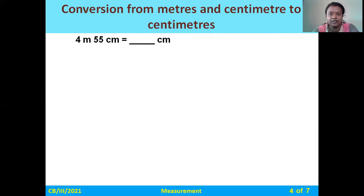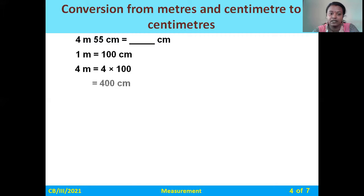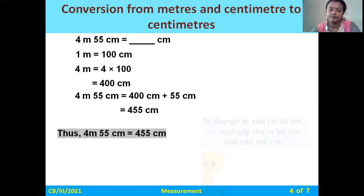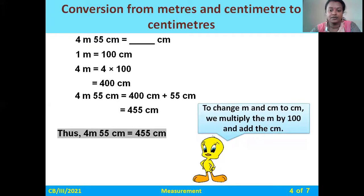Let us see meters and centimeters to centimeters — that is, 4 meters 55 centimeters converted to centimeters. We know 1 meter equals 100 centimeters. So we write 4 meters as 4 × 100 = 400 centimeters. Then we add the 55 centimeters: 400 plus 55 equals 455 centimeters. So to change meters and centimeters to centimeters, multiply the meters by 100 and then add the centimeters.